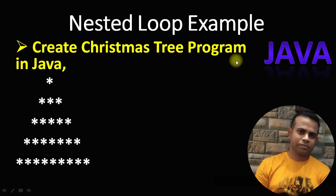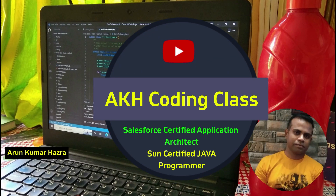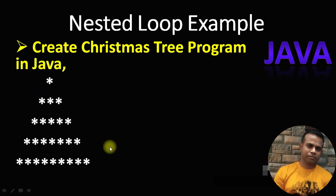Today we will create a Christmas tree program in Java using the nested loop concept. Before jumping to this program, you have to complete the last three nested loop examples, because there I have already explained how to create a nested loop, what is a nested loop, what is the flowchart concept of nested loop, and how they work. Today we will not explain any flowchart for this program — we will just take some examples and then jump to our program in Eclipse.